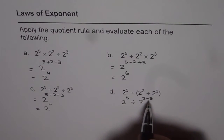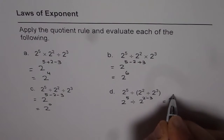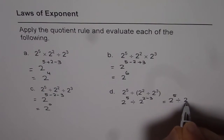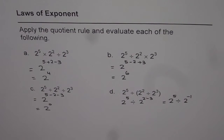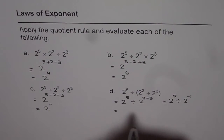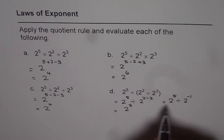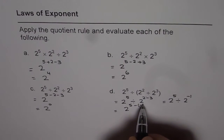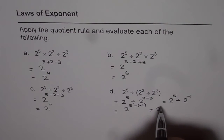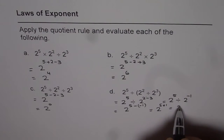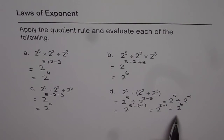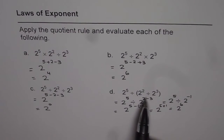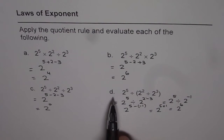2 minus 3 is minus 1. So we get 2 to the power of 5 divided by 2 to the power of minus 1. Now we will do the division, which is 2 to the power of 5. Since it is divided, we say minus of minus 1. That is 2 to the power of 5 plus 1, or 2 to the power of 6. It is very different and a difficult question. Whenever brackets are involved, you have to do the bracket operation first and then left to right.